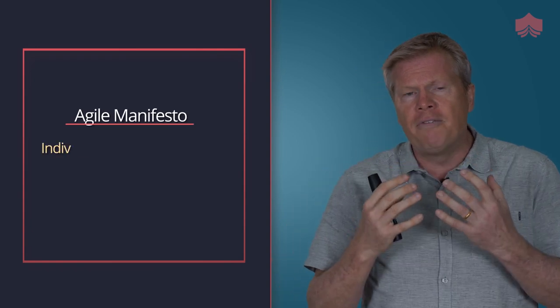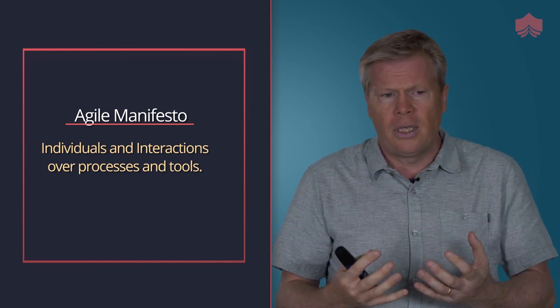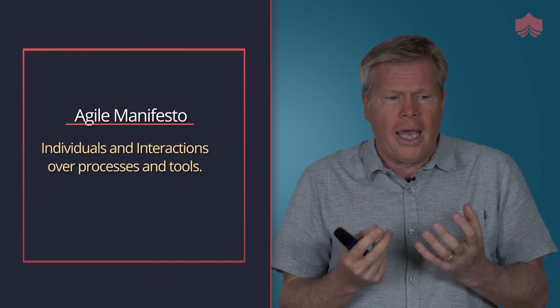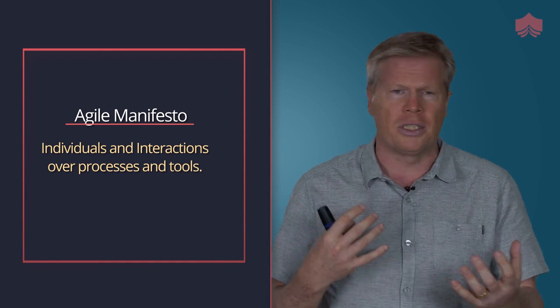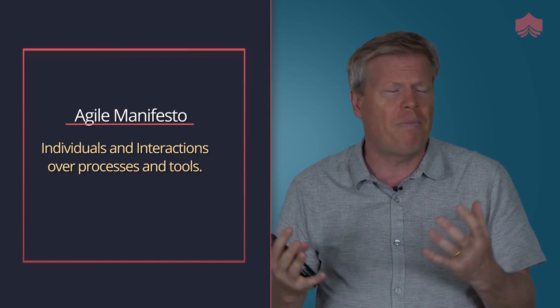In the Agile manifesto, under the values, it says individuals and interactions over processes and tools. Throughout the values and principles it talks about interactions, trusting the individual, and making sure that your team can do the best possible thing. But in order to make sure that your teams can do the best possible thing, you've got to be in an environment that allows them to do the best possible thing.